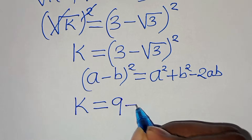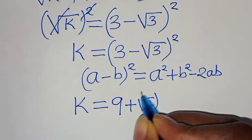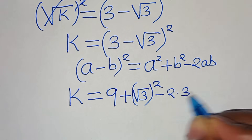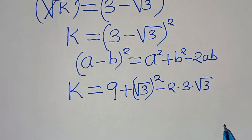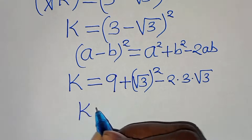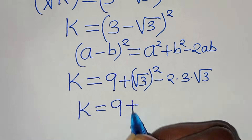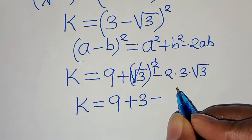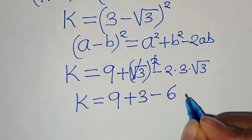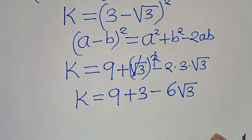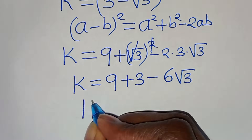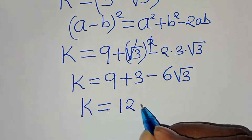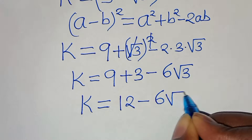Then we add square root of 3 raised to the power of 2, then subtract 2 times 3 times square root of 3. So k equals 9 plus 3 minus 6 square root of 3, which gives us k equals 12 minus 6 square root of 3.